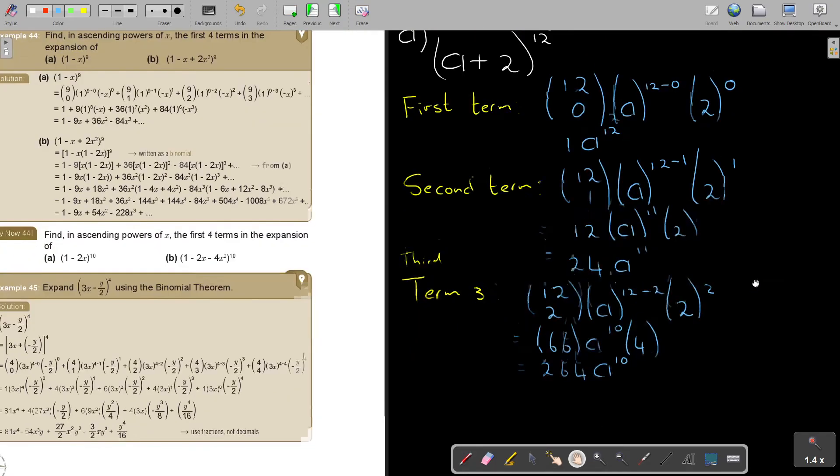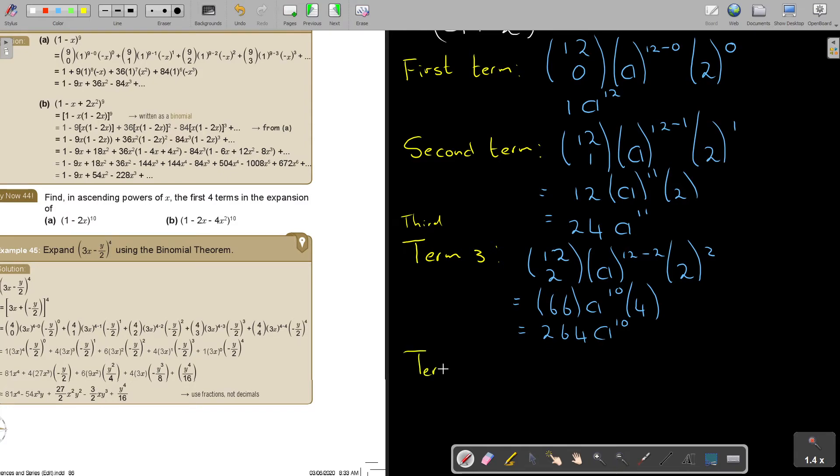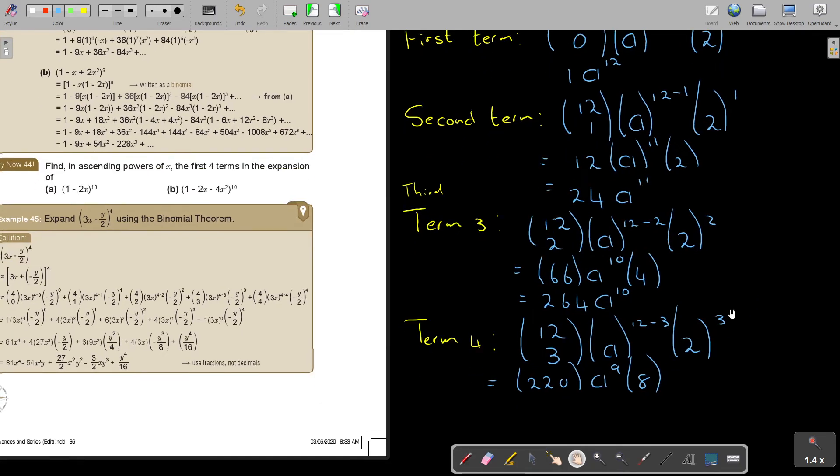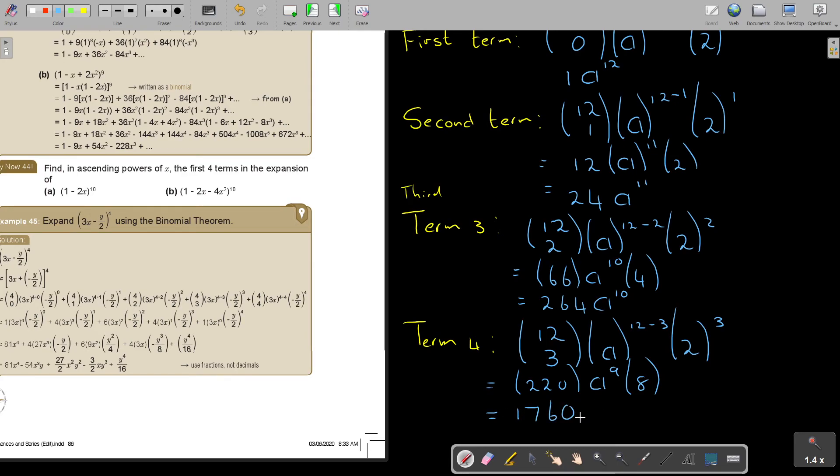And if I move it up, then term 4, or the fourth term. And then I'm going to have 12, and now it's going to be 3, and it's A, 12 minus 3, and it's 3. It's the term, so it's 2, and it's 2 cubed. And then I press 12 choose 3, and it's 220, and it's A to the power of 9, and it's 8, multiply by 8. So it's 1760, and it's A to the power of 9.